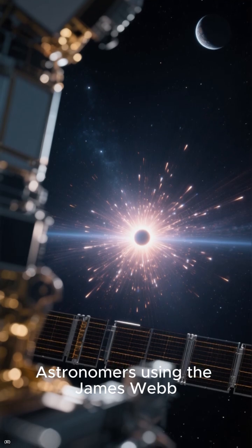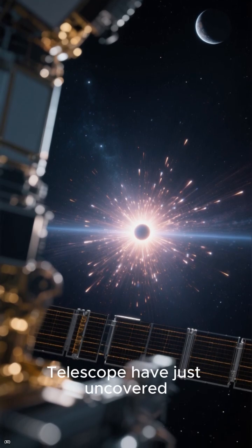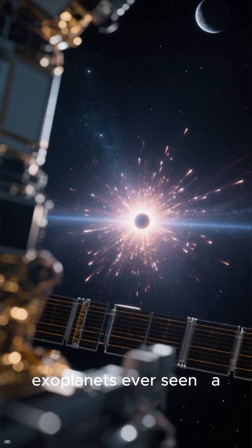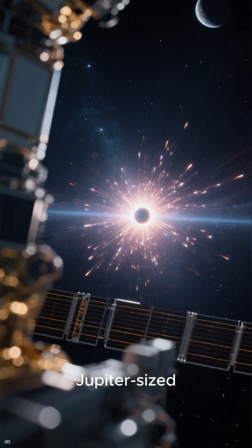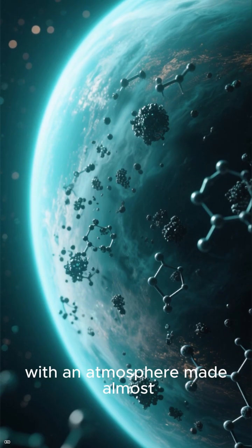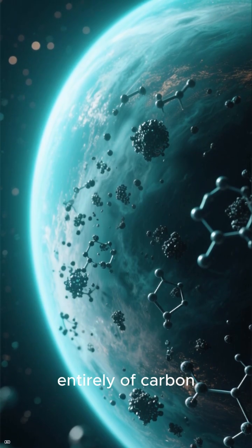Astronomers using the James Webb Space Telescope have just uncovered one of the strangest exoplanets ever seen, a Jupiter-sized world orbiting a pulsar, with an atmosphere made almost entirely of carbon.